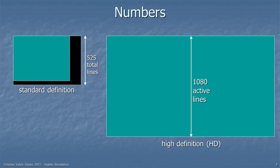In the old days of standard definition television, we talked about the total number of lines, including those that were used for synchronization — that's the black area shown. So in the U.S., we had 525 total lines; in Europe, we typically had 625 total lines.